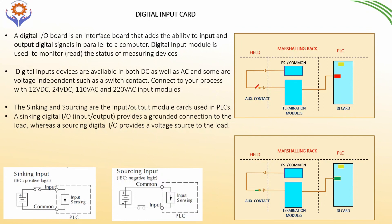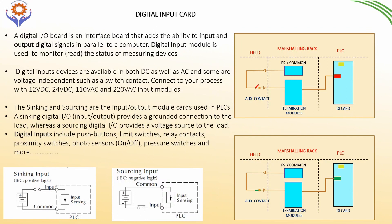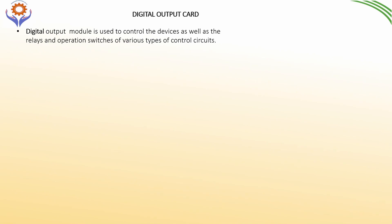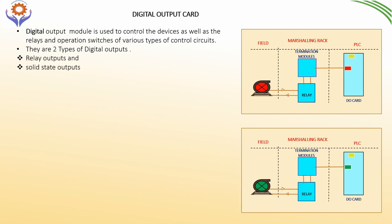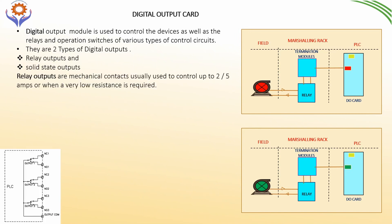Some examples of input devices include push buttons, limit switches, relay contacts, proximity switches, photo sensors, pressure switches, etc. The digital output module is used to control devices as well as relay and operation switches of various types of controlled circuits. There are two main types of digital outputs: relay outputs and solid state outputs. Relay outputs are mechanical contacts usually used to control up to 2 to 5 amperes or when a very low resistance is required.